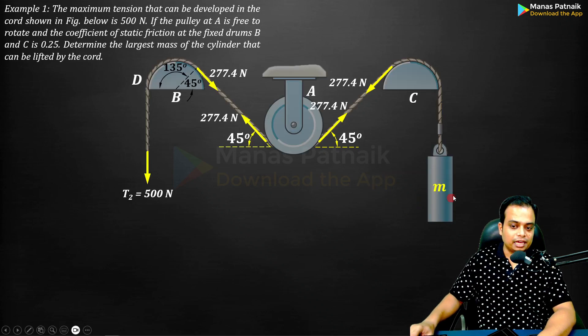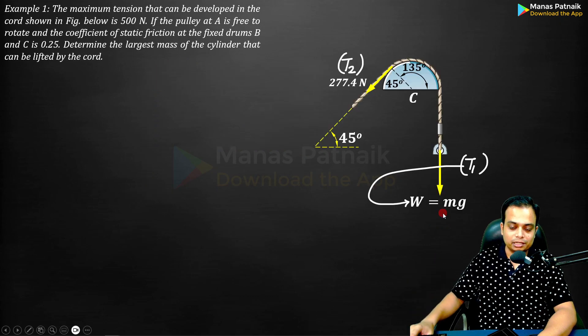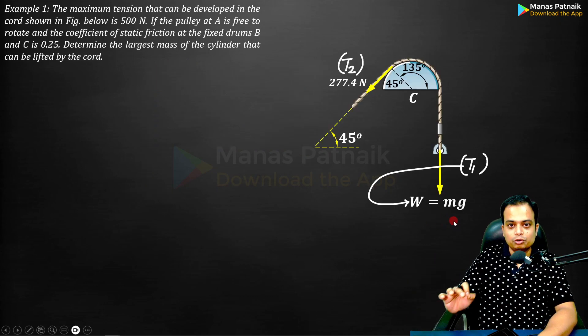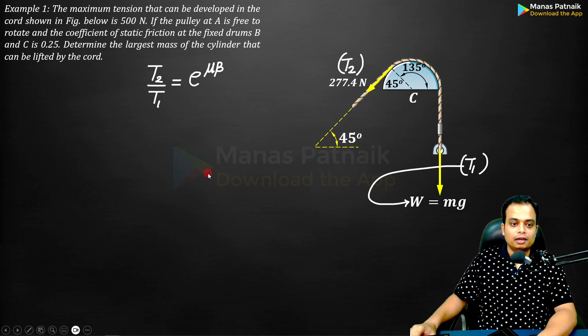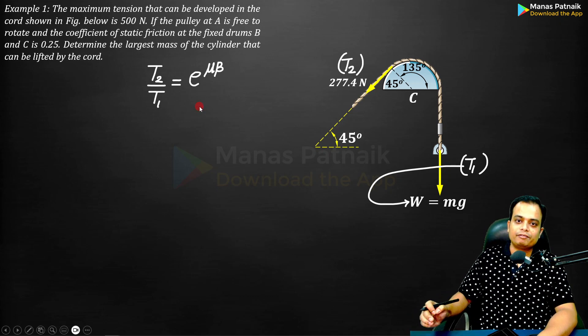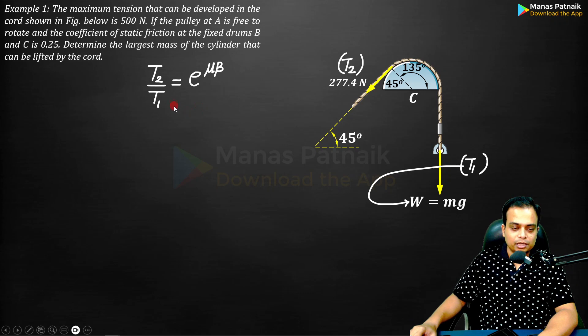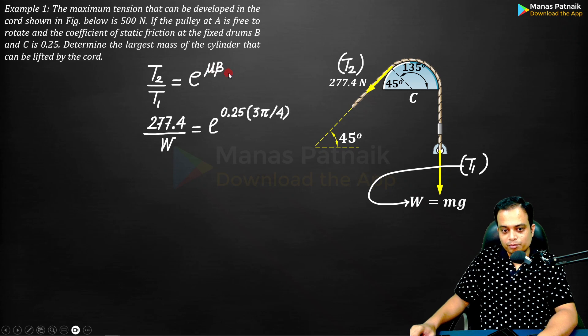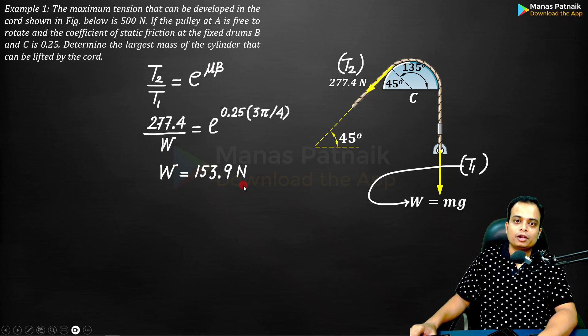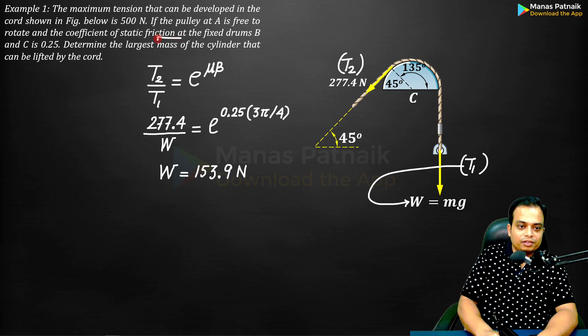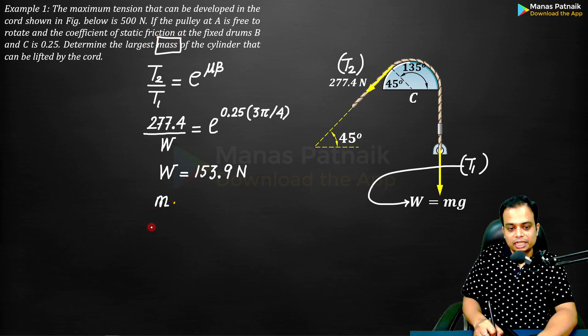The cylinder's mass is m, the corresponding weight is mg. T2 by T1 - same formula, this is the relationship we developed in the last class. Plug in the value: T2 is 277.4 over T1 which is w, e power mu beta. Solve for w: 153.9.